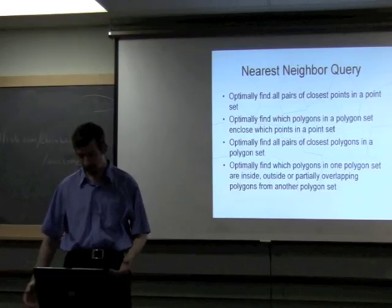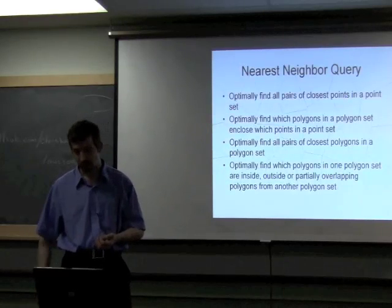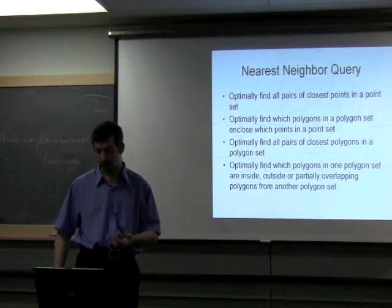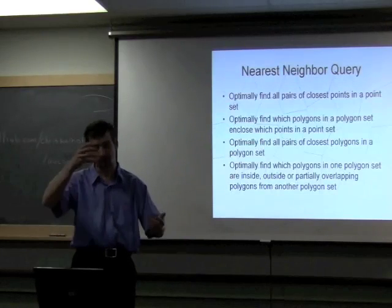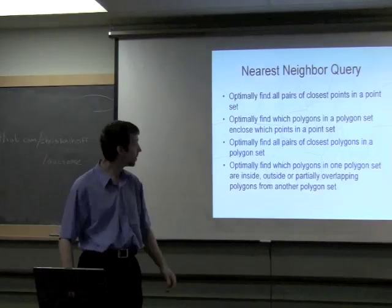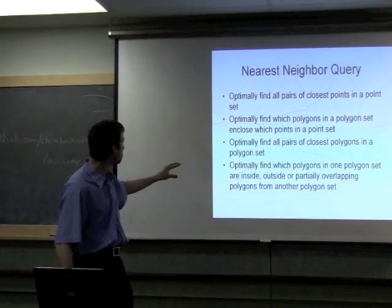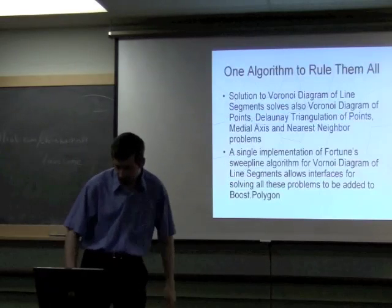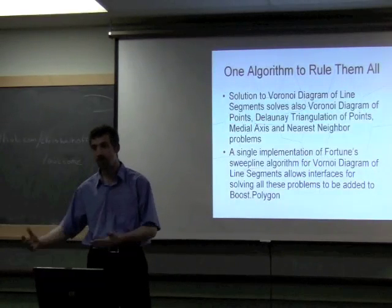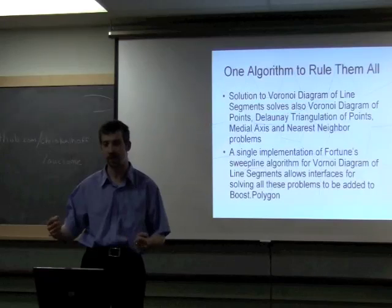For nearest neighbor query, if you have a bunch of points and you want to know the nearest neighbor of any point, you can get it directly from the Voronoi diagram graph. You can do all kinds of things with segment-based queries, finding which polygons enclose other polygons by traversing the whole graph. It's one algorithm to rule them all. We've got all these problems we can solve with a single implementation, so there's strong motivation to implement this algorithm.